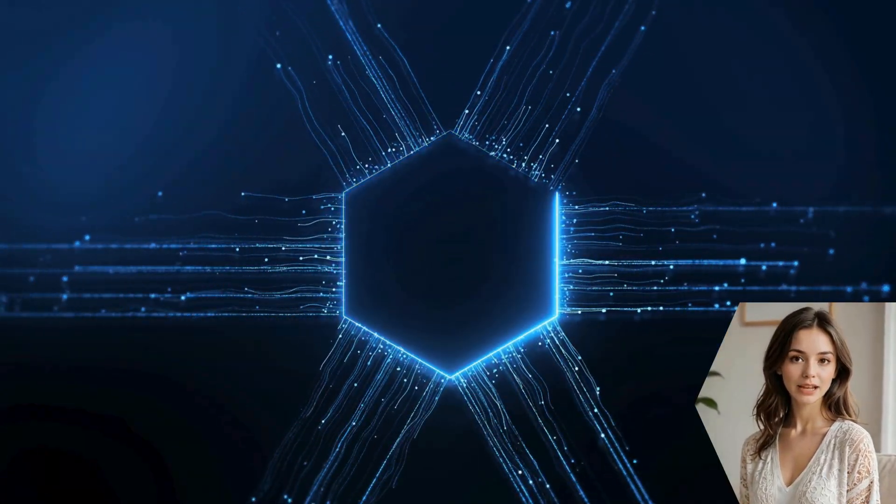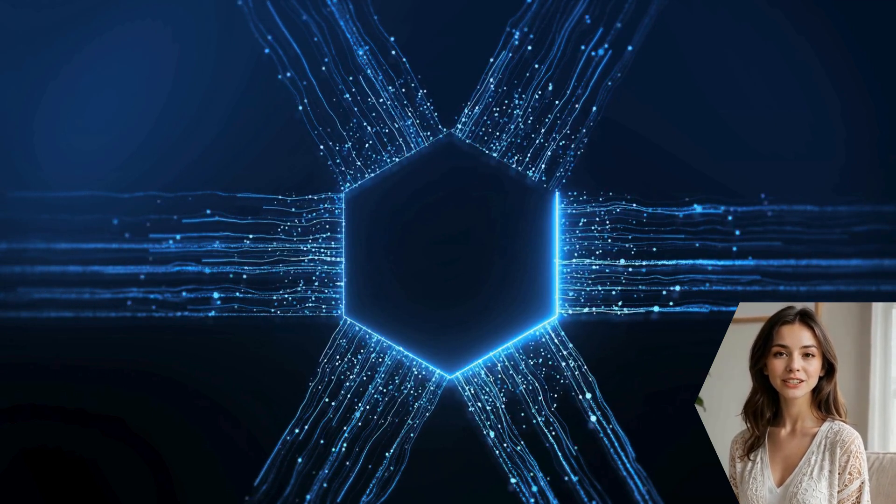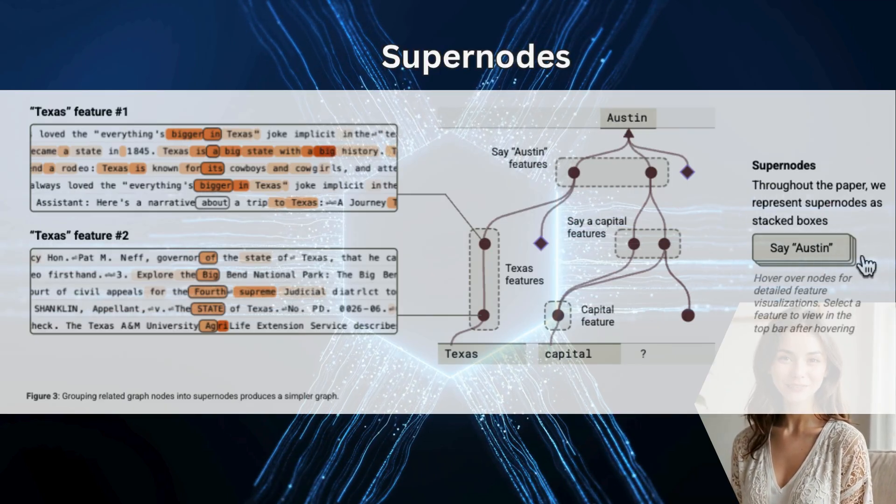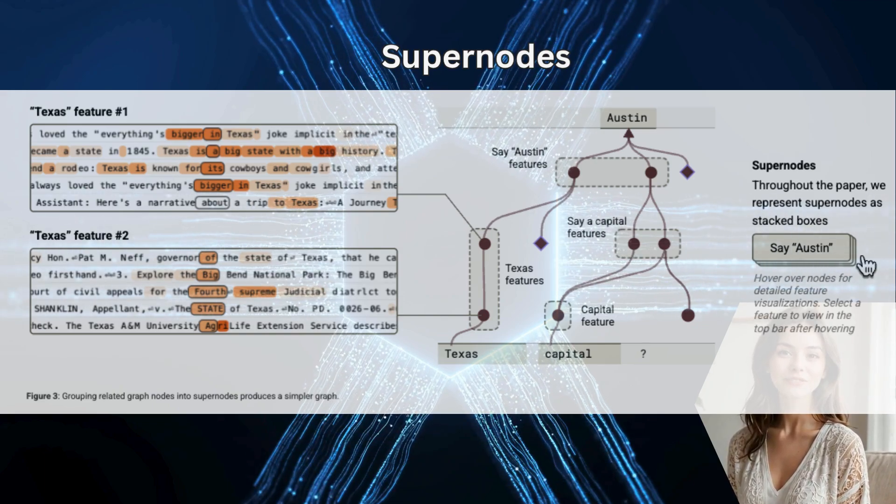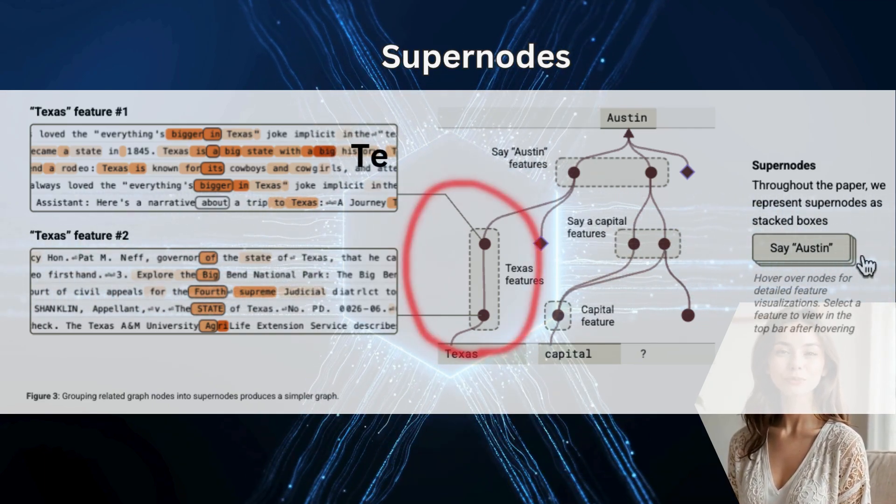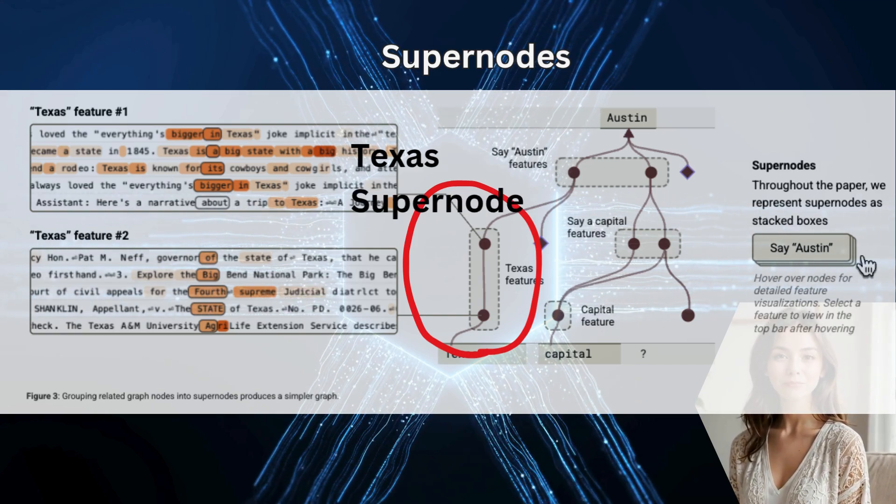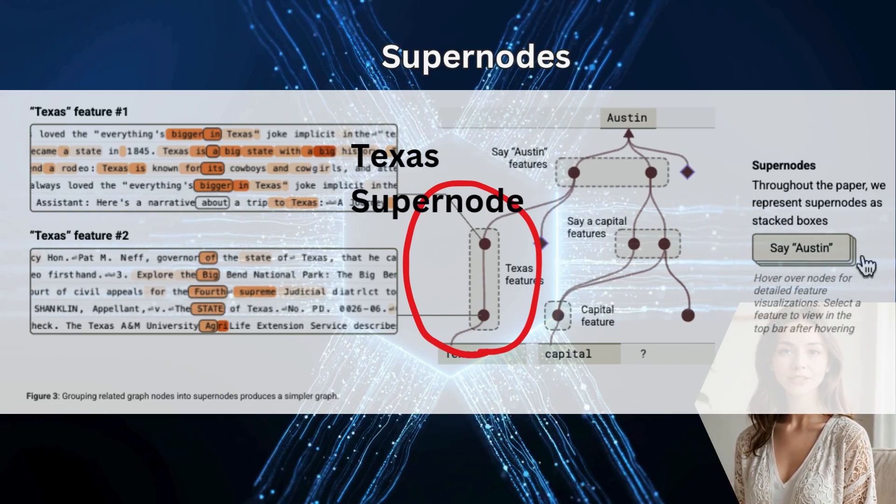These graphs can still be incredibly complex. So the researchers group related features into supernodes. For example, several different features that all relate to the concept of Texas can be grouped into a single Texas supernode. This simplifies the map, making the overall algorithm much easier to read, like the ones you see here.